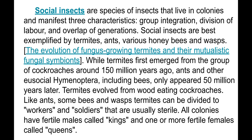While termites first emerged from the group of cockroaches around 150 million years ago, ants and other social insects, including bees, only appeared 50 million years later — so it's 100 million years ago.